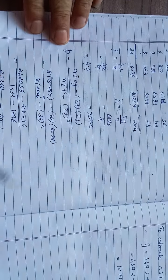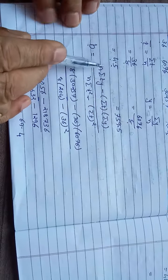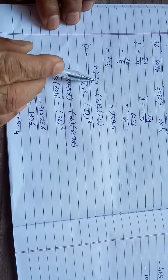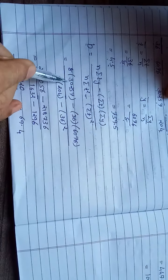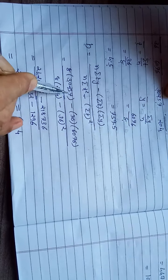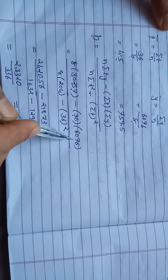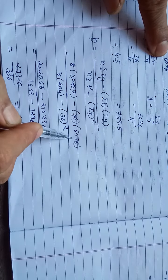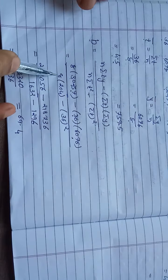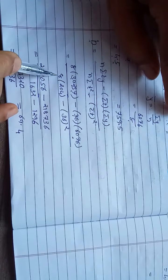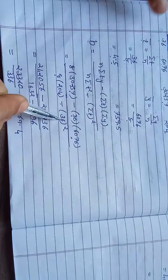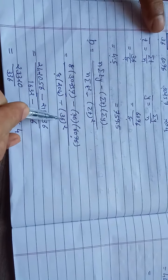Substituting the value: n is 8, sigma ty is 30275 minus sigma t is 36, sigma y is 6076, upon n means 8, sigma t square is 204 minus sigma t bracket square means 36 bracket square.